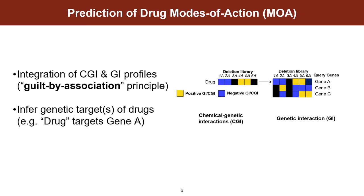What you can do with the same deletion library is interrogate whether these gene deletions are conferring an unexpected fitness effect in the presence of another query gene knockout. So what you are building out here on the right side are genetic interaction profiles. What's cool about this is that you can find profile similarities between the drug profiles and genetic interaction profiles, and if they look very similar, then you can infer, for example, that this drug is targeting gene A.